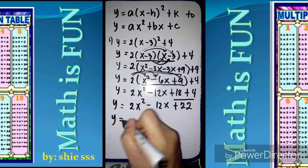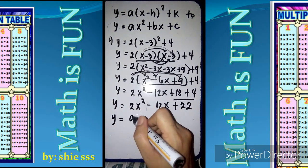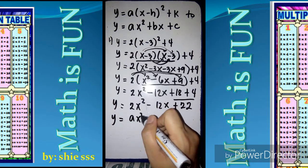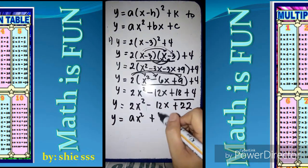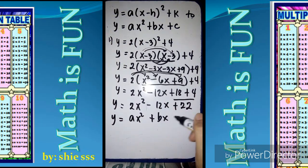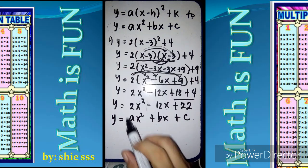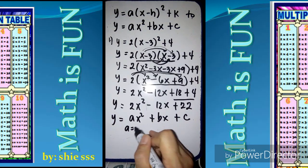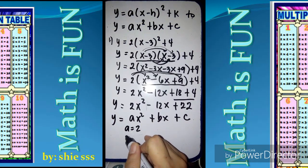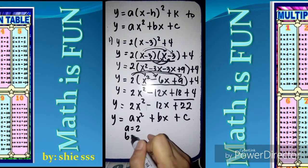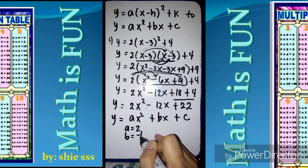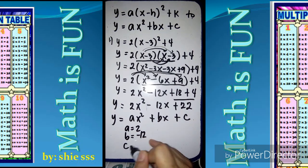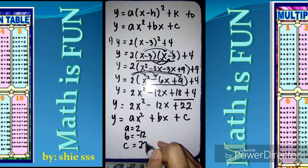Now it is in the form of y equals ax squared plus bx plus c. If we're going to identify what is a, our a is 2, our b is negative 12, and c is 22.